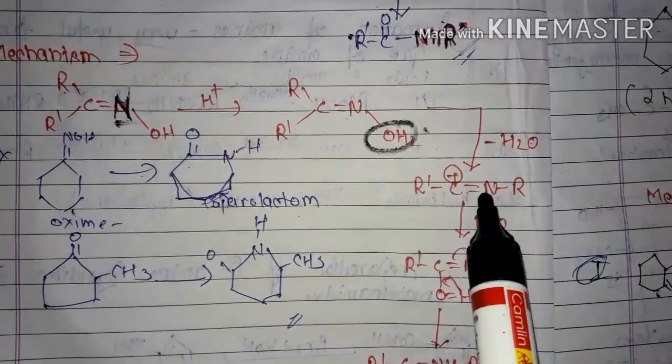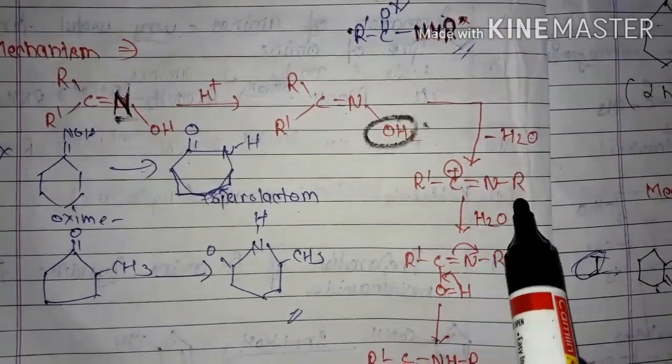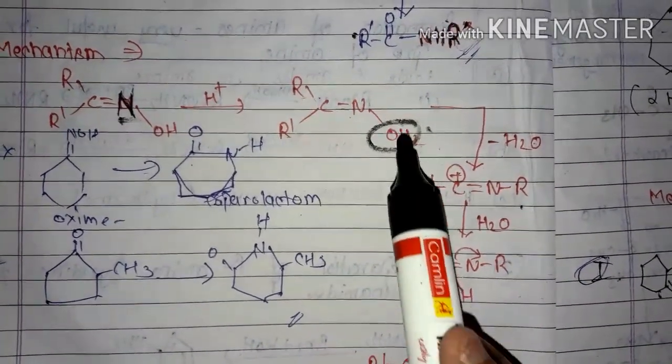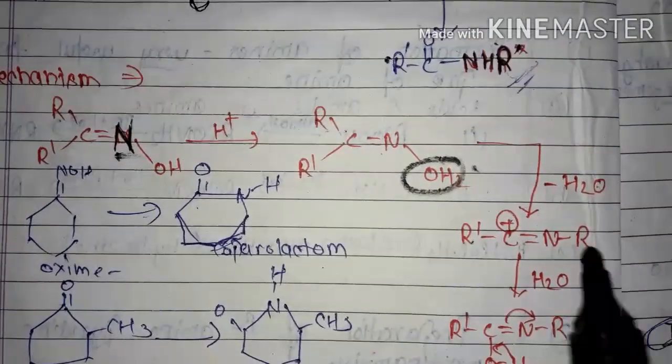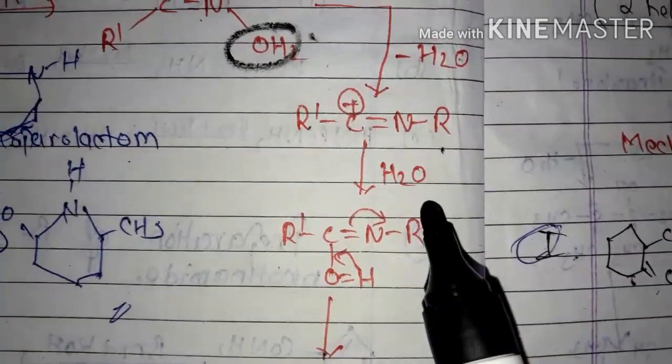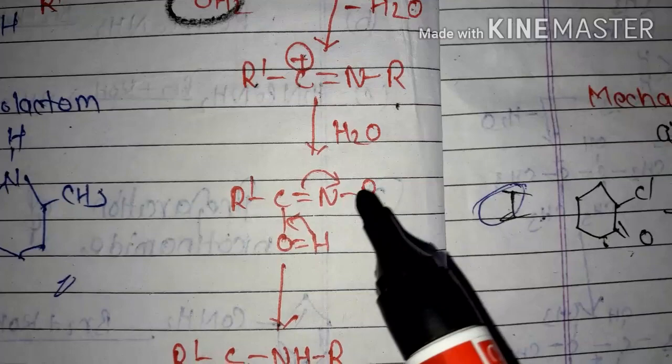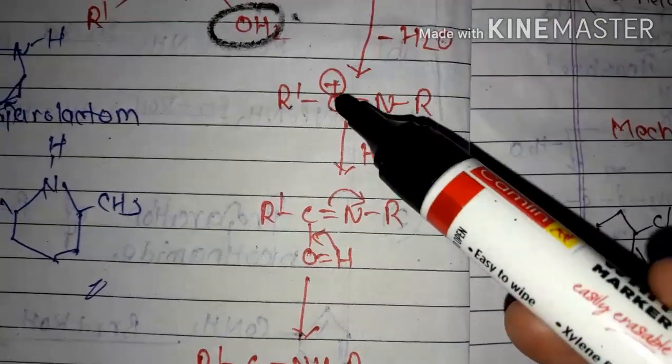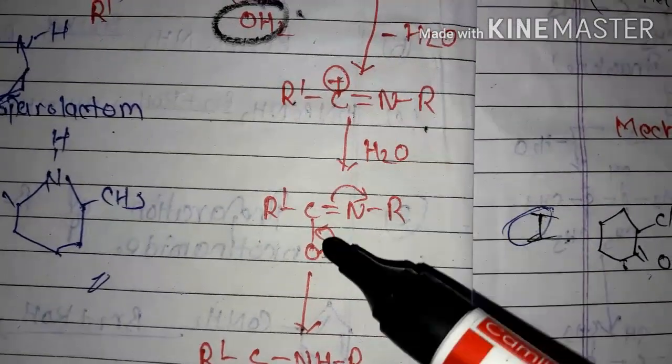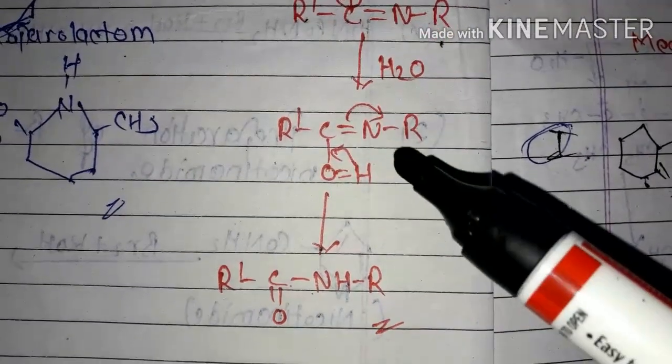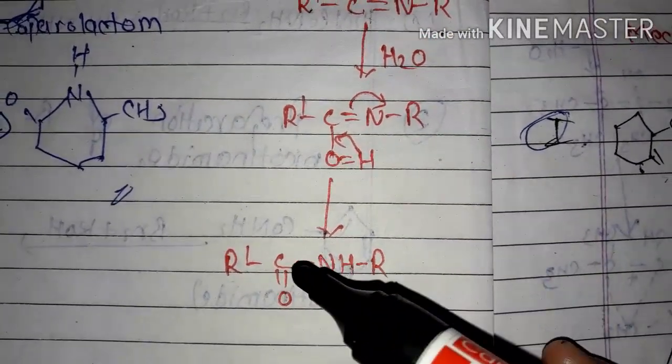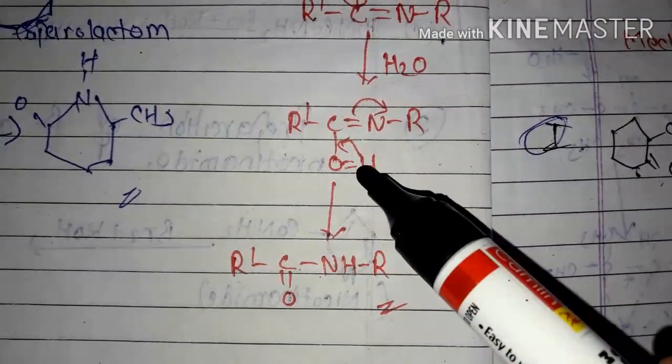Then H2O is removed and what product do you get? R' on C becomes positively charged because carbon's valency is not complete, then N and R. The same product remains. First H joins to make H2O, then in the next step H2O is removed. Clear? This is basic. Now see, we will do the reaction of H2O. When we do the reaction with H2O, O-H will join with carbon.